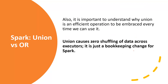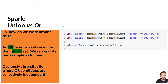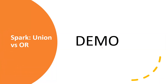The Union operator is a much more efficient solution for this particular problem because it causes zero shuffle. The workaround is to rewrite the query using Union instead of OR. We split the join into two separate joins — one for each condition — then do a Union of the two intermediate data frames. We can verify this by checking the physical plan or the Spark UI.